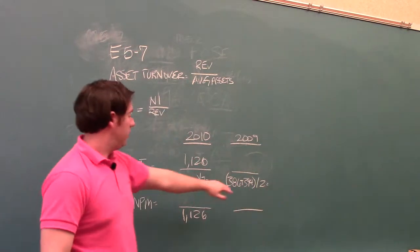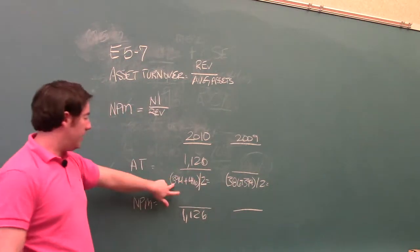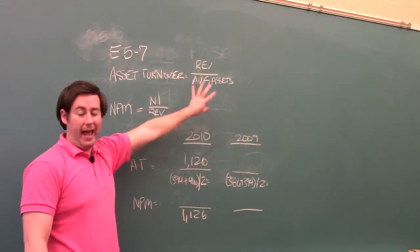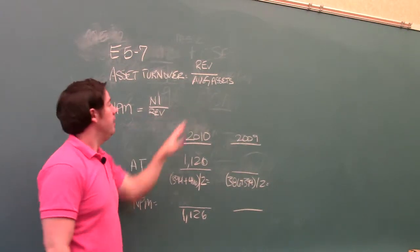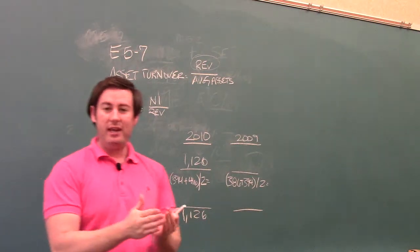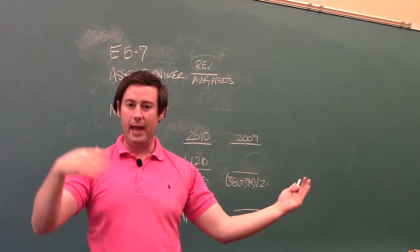Don't forget, the end of the year assets here are the beginning of the year assets here. Don't forget the reason why we're doing average total assets. Revenue here is through a period. Remember the income statement is through a period. Start to A to B, starting to ending.